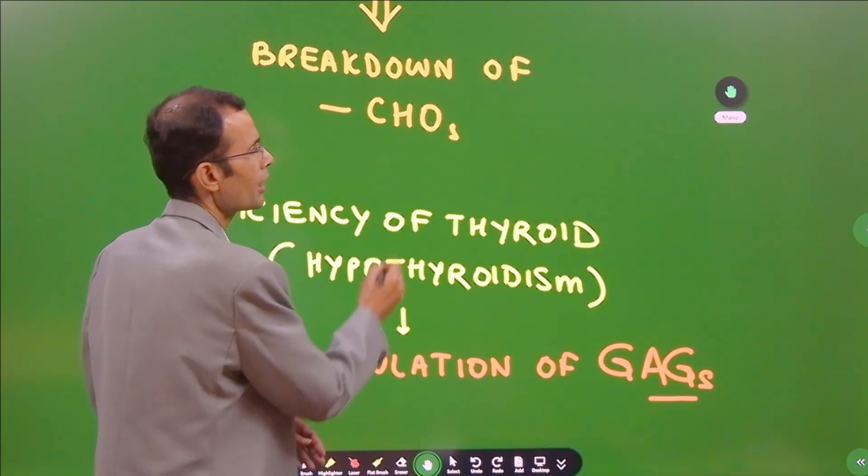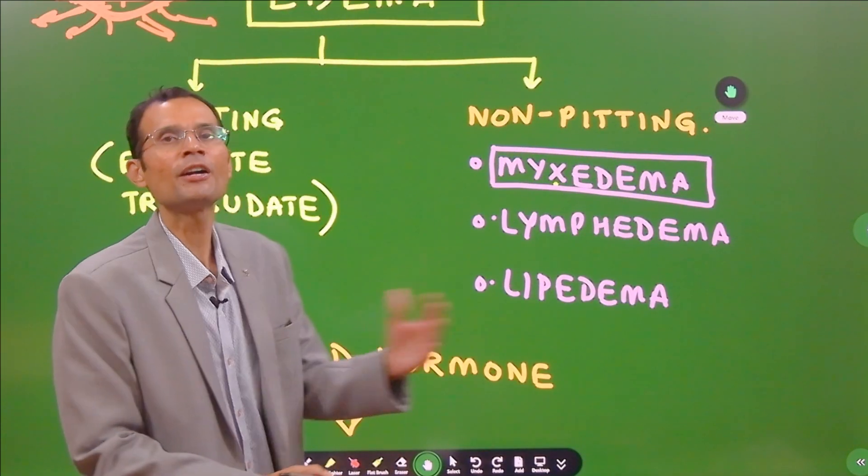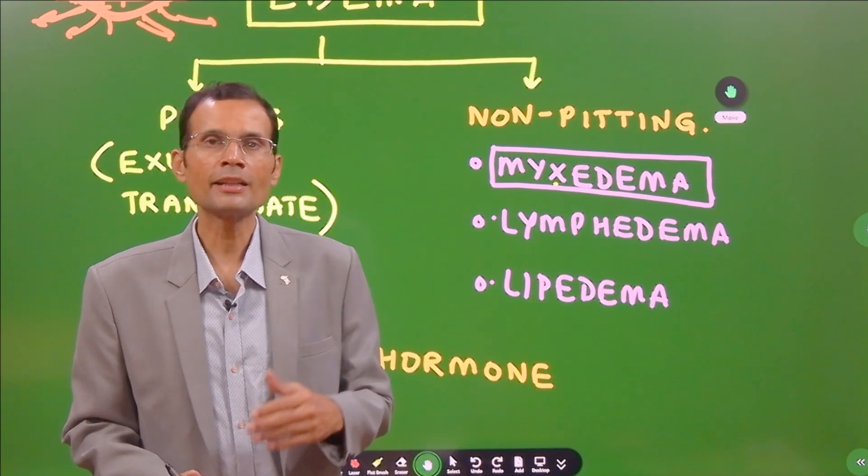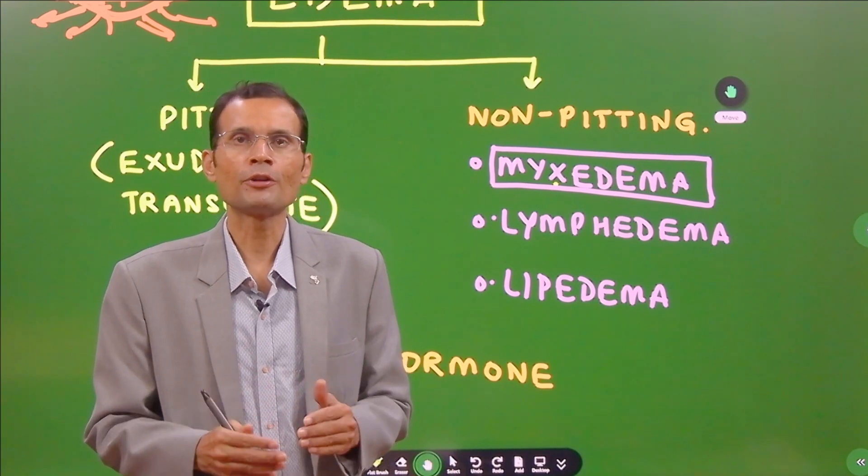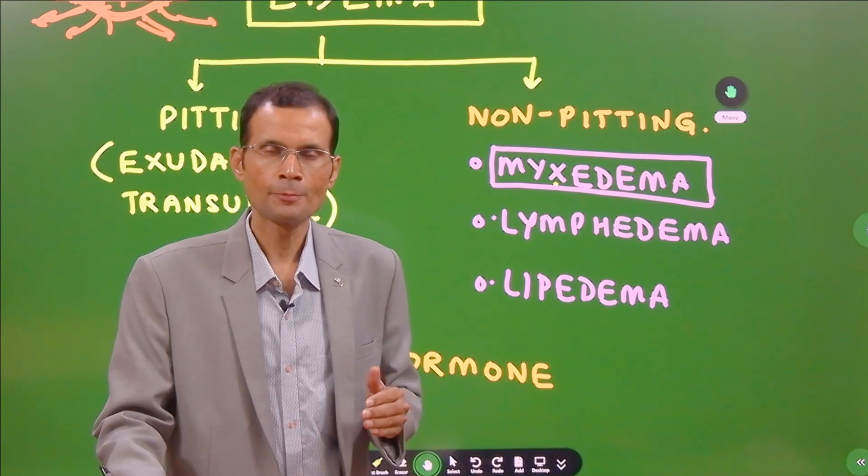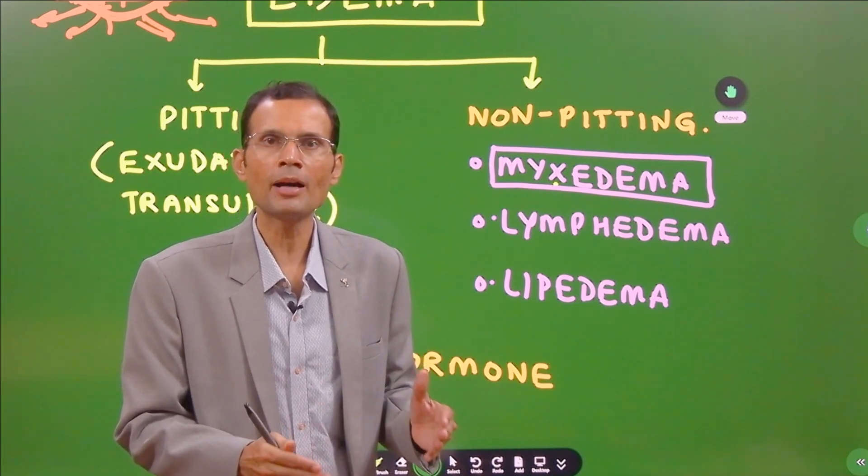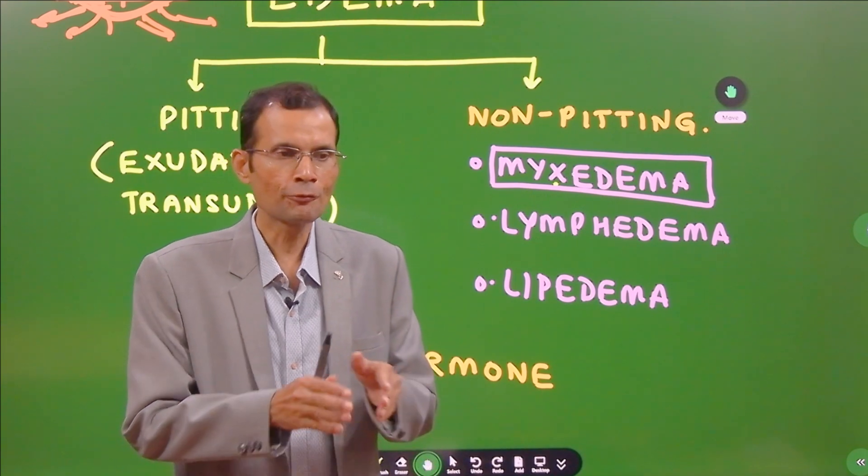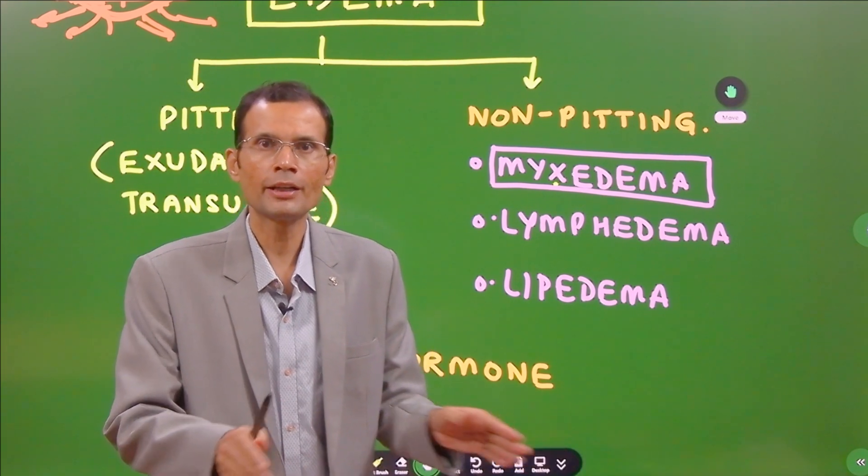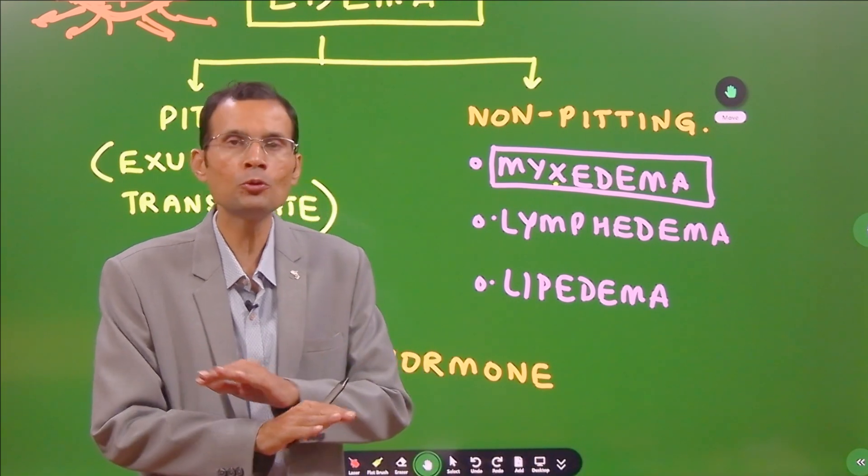Apart from this, there are a few conditions. For instance, lymphedema seen in elephantiasis. The microfilariae often block the lymphatic drainage. The resultant edema is such that if you apply pressure, the fluid has nowhere to go. It can't disperse. Therefore, there is no pit formation.